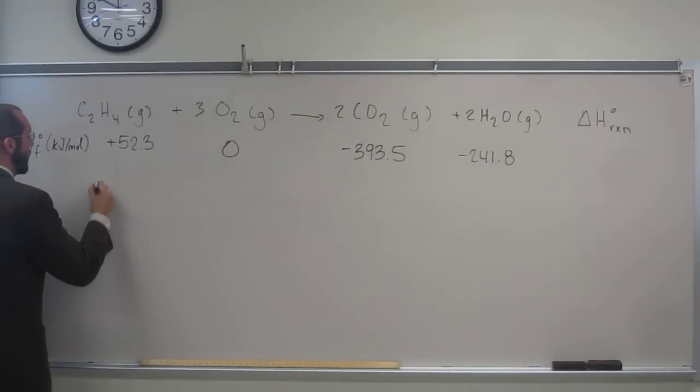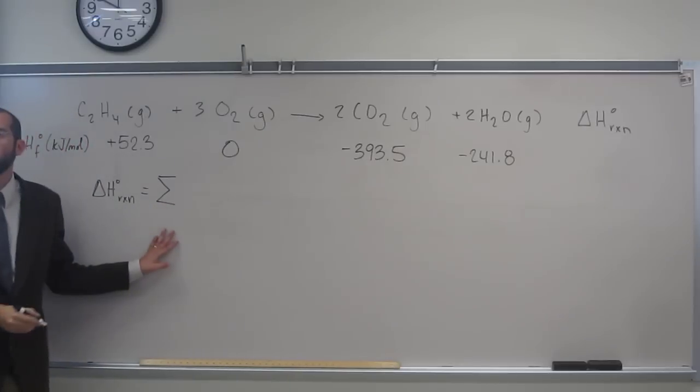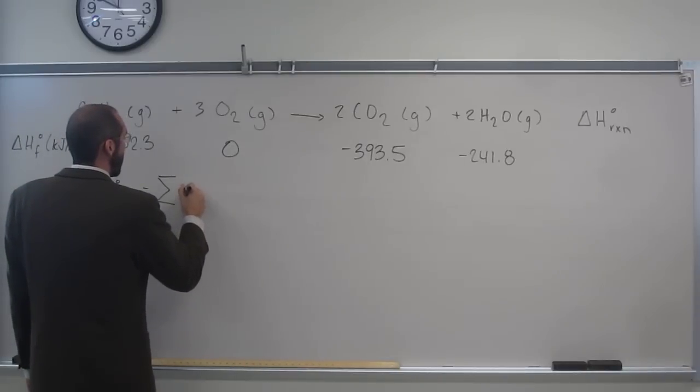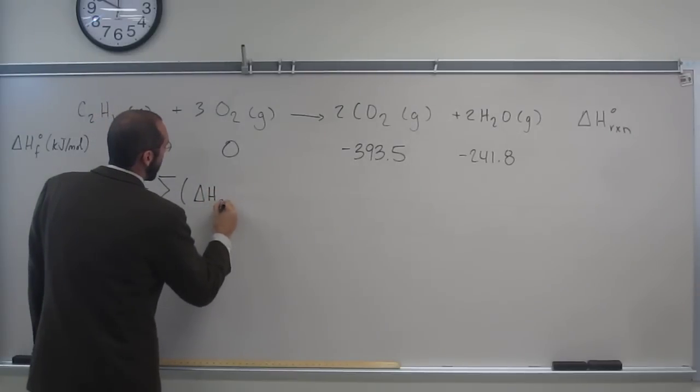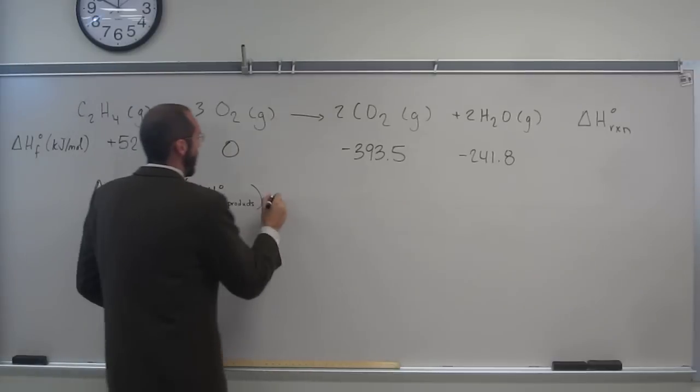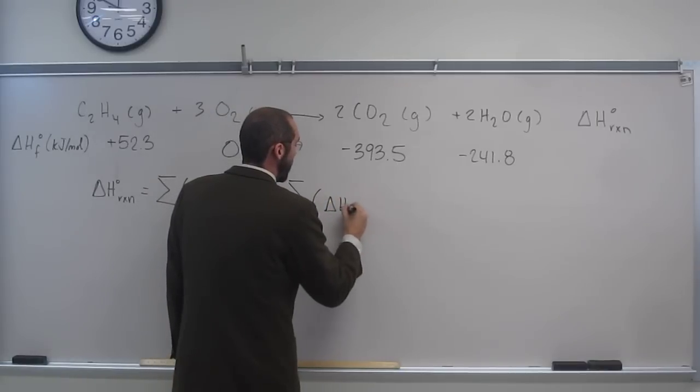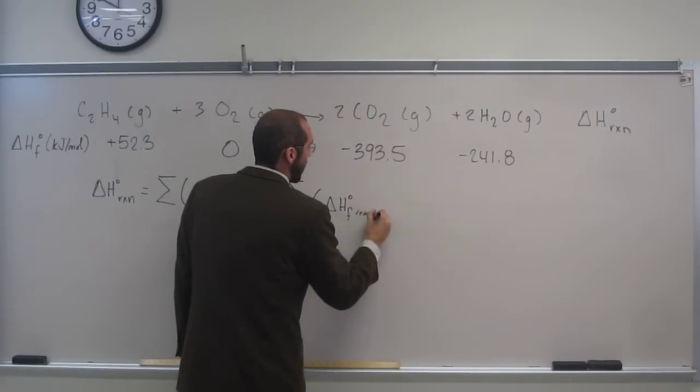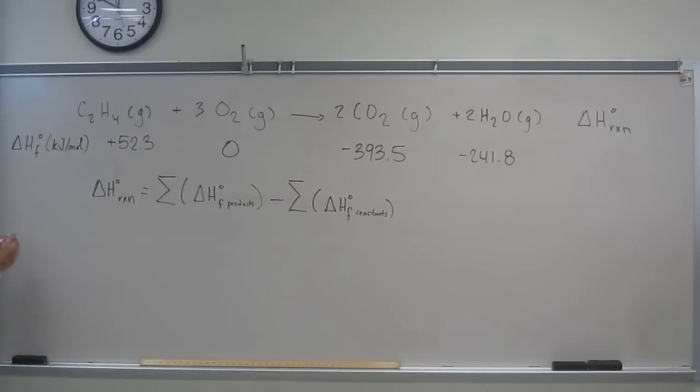So how do we do this? The heat of the reaction is going to be the sum. You guys know the summation symbol, right? The sum of the heat of formation of the products, minus the sum of the heat of formation of the reactants. Now let's see if we can fit all of that in one line on the small board.